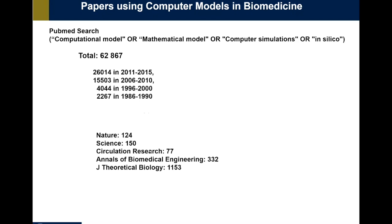I also looked at how many of these papers were published in specific journals. You can see that only 124 were published in Nature, 150 were published in Science, and more than 1,000 were published in the Journal of Theoretical Biology. I think this tells us something about how much research is being done as mathematical biology and how much we are pushing the boundaries of computational biomedicine to actually have an impact in biomedicine, which is obviously a huge challenge.